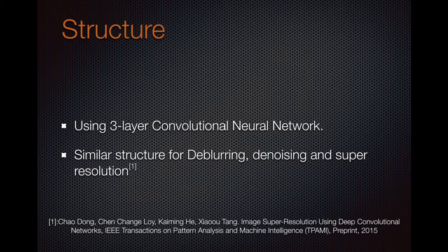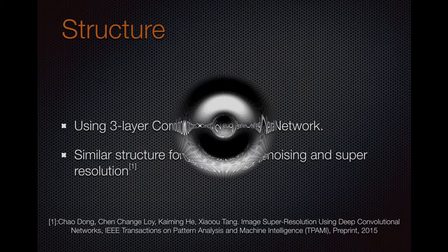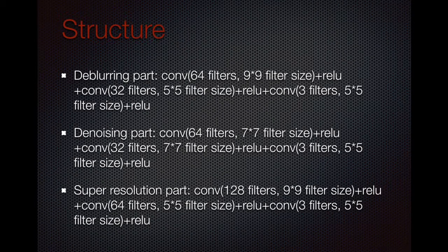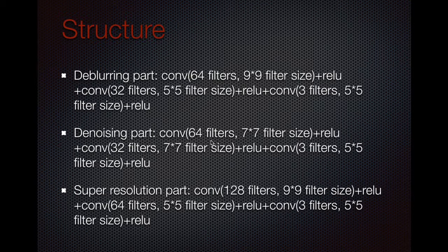For the structure of my CNN, I use a three-layer CNN. They have similar structures for deblurring, denoising, and super-resolution. For the deblurring part, I use three conv layers. The first conv layer is 64 filters with 9x9 filter size, the second is 32 filters with 5x5 filter size, and the last one is 3 filters with 5x5 filter size. The reason the last number of filters must be 3 is that the dimension of a picture is 3 — RGB. There is not much difference between the denoising and super-resolution CNN; the only difference is the number of filters and filter sizes.